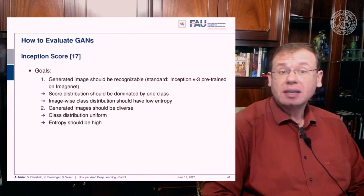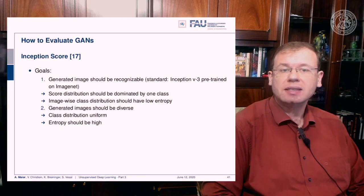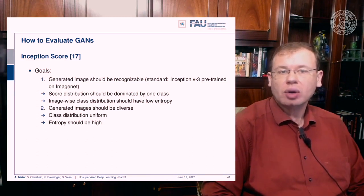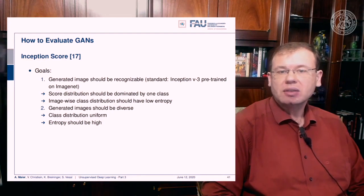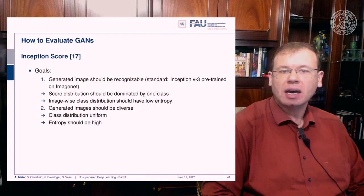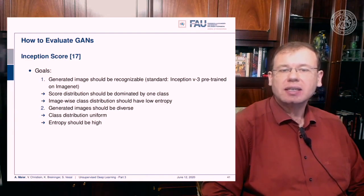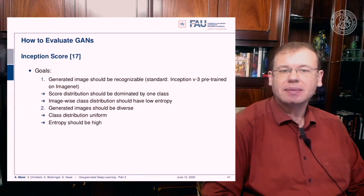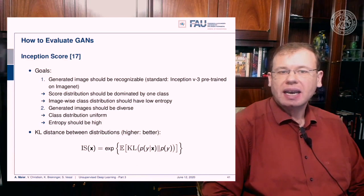How do we evaluate GANs? We can look at images and say they look realistic or not, but this is intractable for large datasets, so we use a score. One idea is the inception score, based on two goals: generated images should be recognizable — using a pre-trained Inception v3 network on ImageNet, the per-image class distribution should have low entropy, dominated by one class — and generated images should be diverse, so the overall class distribution should be roughly uniform with high entropy. The inception score is expressed as e to the power of the expected value of the KL divergence between p(y|x) and p(y).